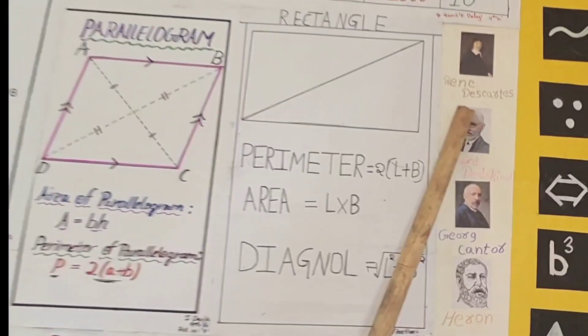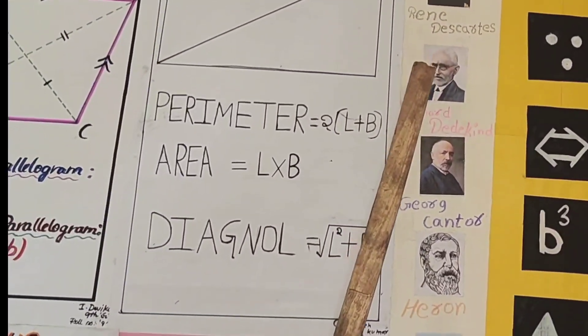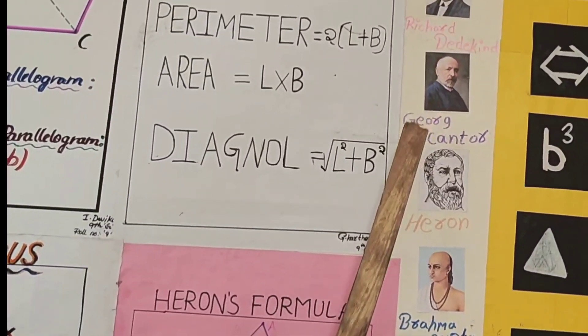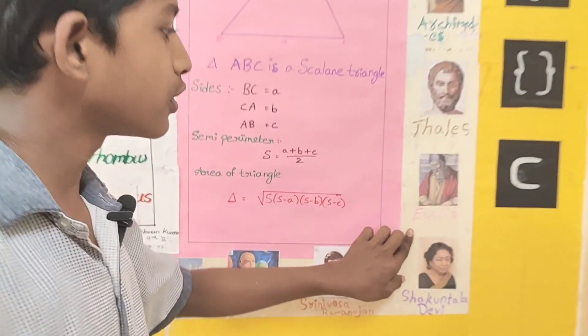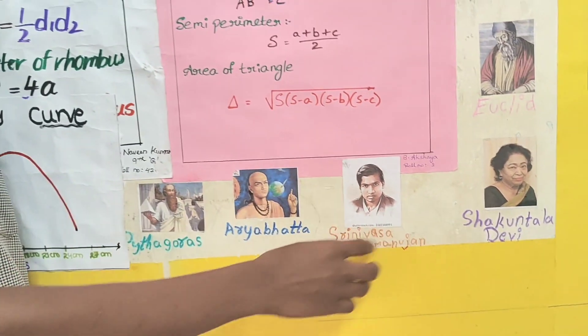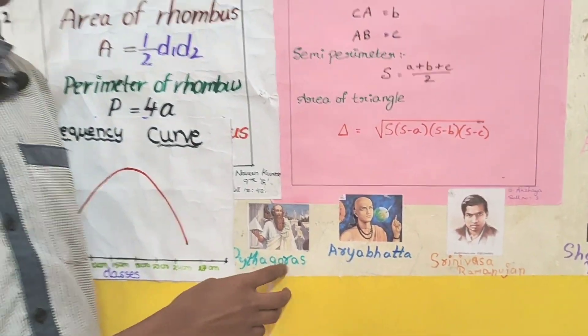These are mathematicians: Rene Descartes, Riemann, Dedekind, George Cantor, Hypatia, Brahmagupta, Archimedes, Thales, Euclid, Shakuntala Devi, Srinivasa Ramanujan, Aryabhata, Pythagoras.